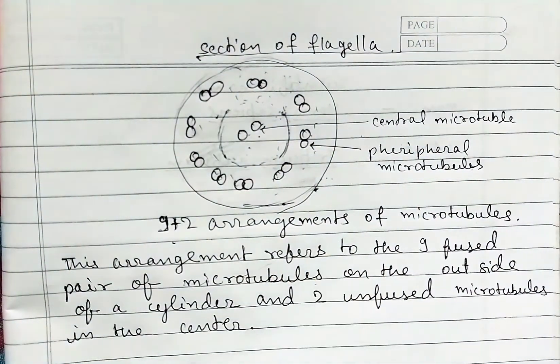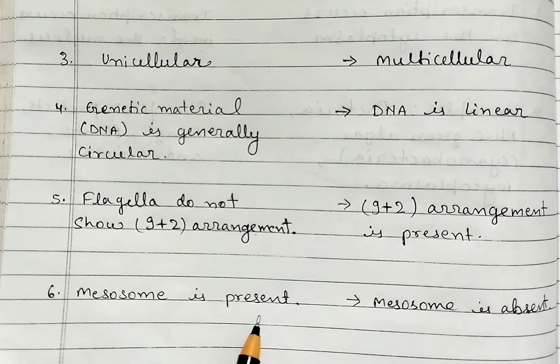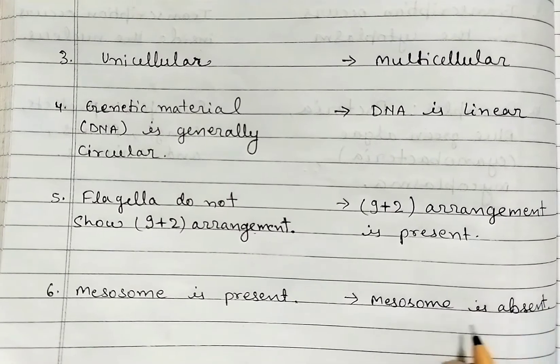Sixth, mesosomes are present in prokaryotic cell and mesosomes are absent in eukaryotic cell.